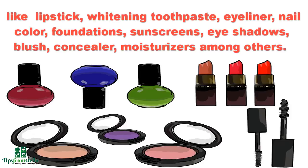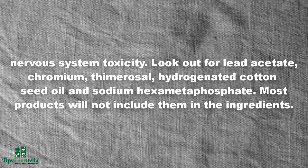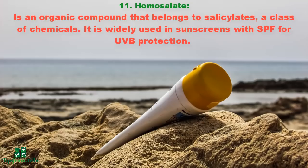Metals like iron are important for the proper functioning of the body, but when they accumulate in high amounts they are linked to reproductive, immune, and nervous system toxicity. Look out for lead acetate, chromium, thimerosal, hydrogenated cottonseed oil, and sodium hexametaphosphate. Most products will not include them in the ingredients list.